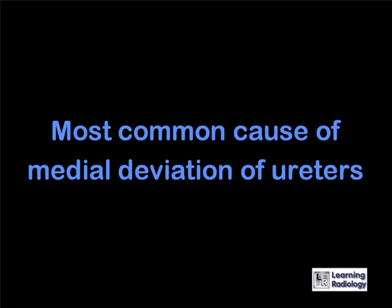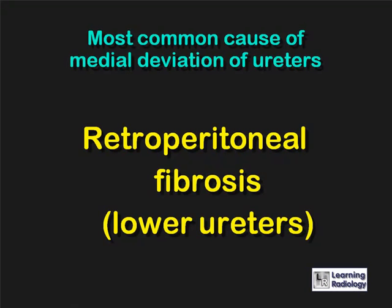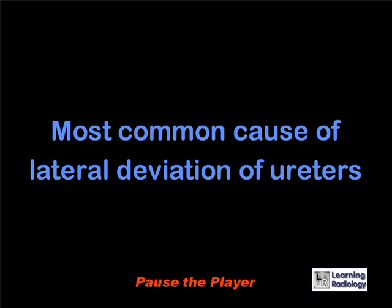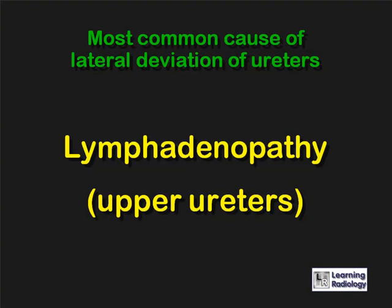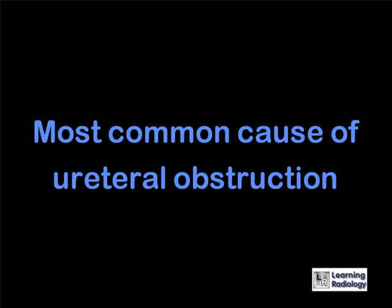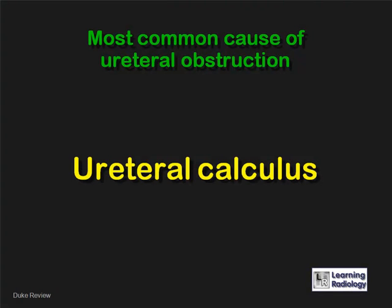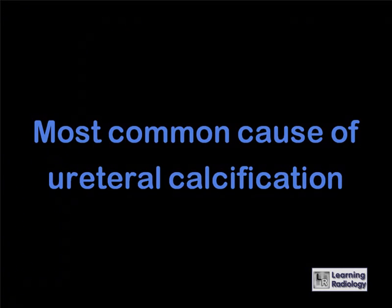What is the most common cause of medial deviation of the ureters? Retroperitoneal fibrosis, especially the lower ureters. What is the most common cause of lateral deviation of the ureters? Lymphadenopathy, especially the upper ureters. What is the most common cause of ureteral obstruction? A ureteral calculus. What is the most common cause of ureteral calcification? Tuberculosis.